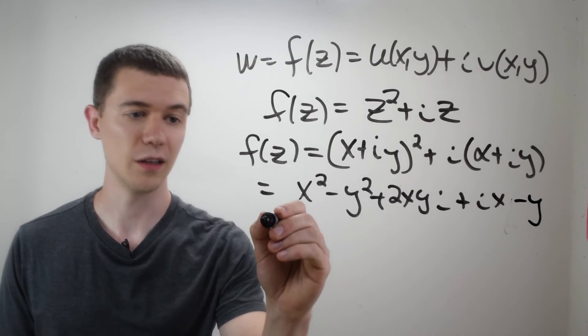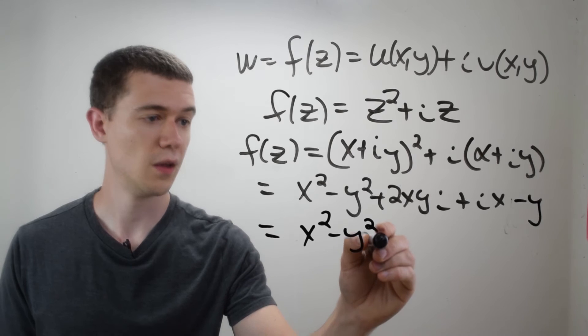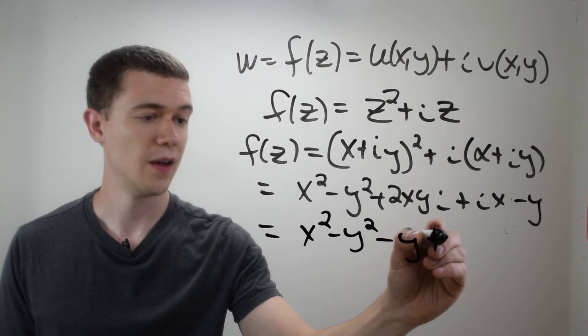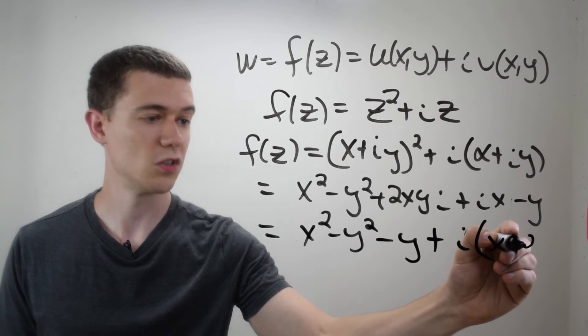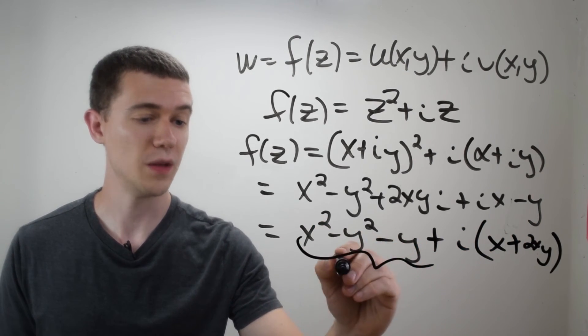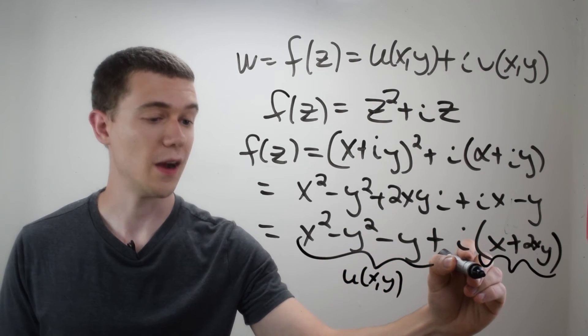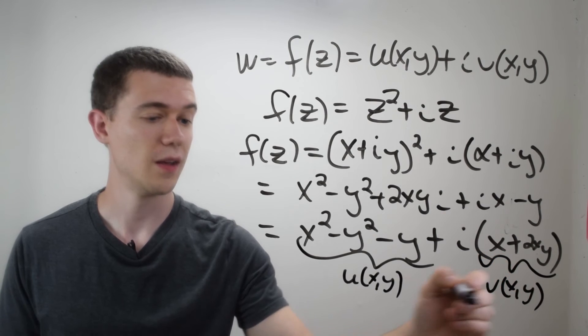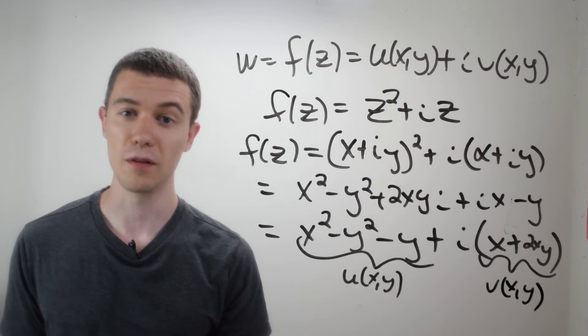And now I'll simply combine like terms to make this x squared minus y squared minus y. And then I'll have i times x plus 2xy. And so this piece, the real piece, is u of x and y. And this piece, without the i, is v of x and y. So u is the real part of the function and v is the imaginary part of the function.